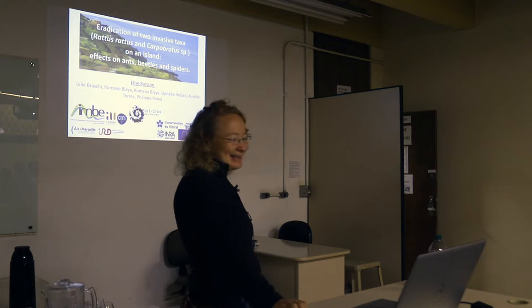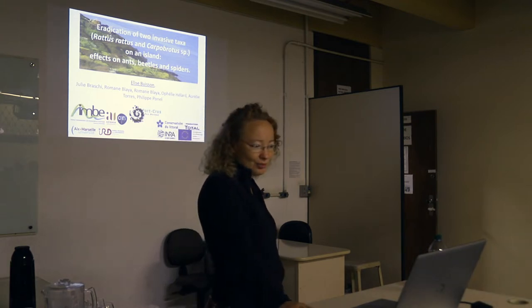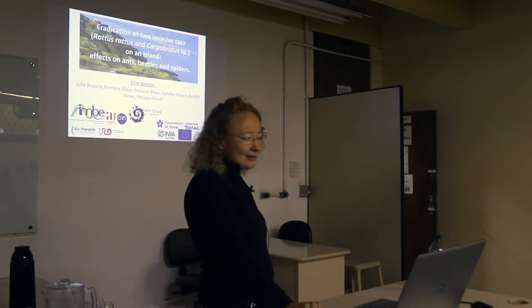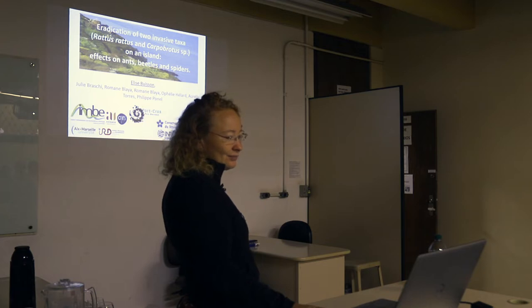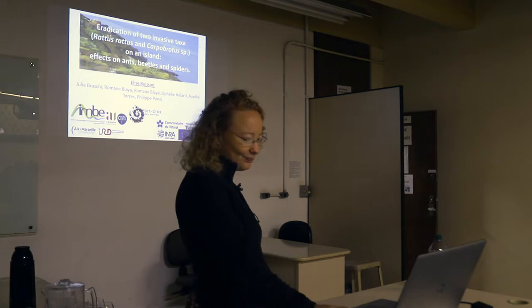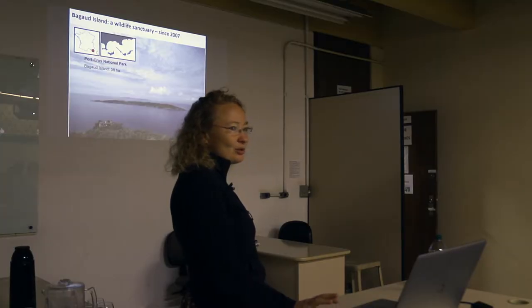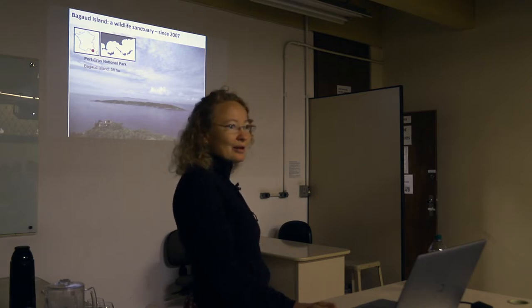I'm going to talk about an island located in southern France where we had two invasive species, the rat and Carpobrotus, and the effect of controlling these two species on ants, beetles, and spiders. This island is located in the Mediterranean Sea in southern France. It's part of the national park of Porquerolles and it's 58 hectares. It's been a wildlife sanctuary since 2007, so nobody is allowed to go on the island except scientists or managers.